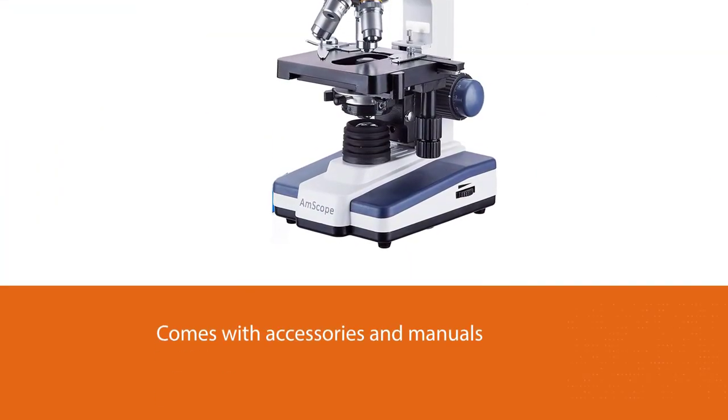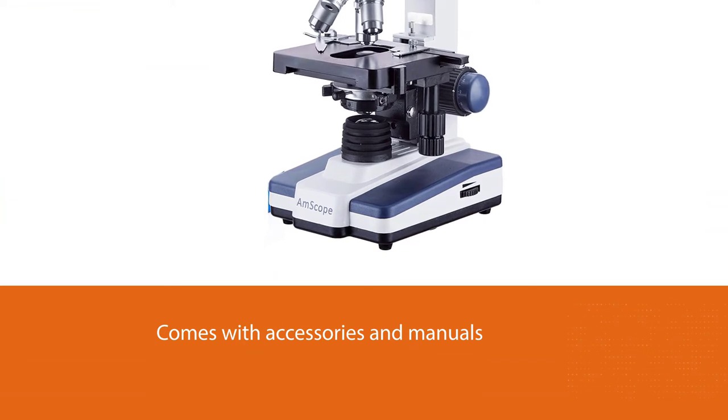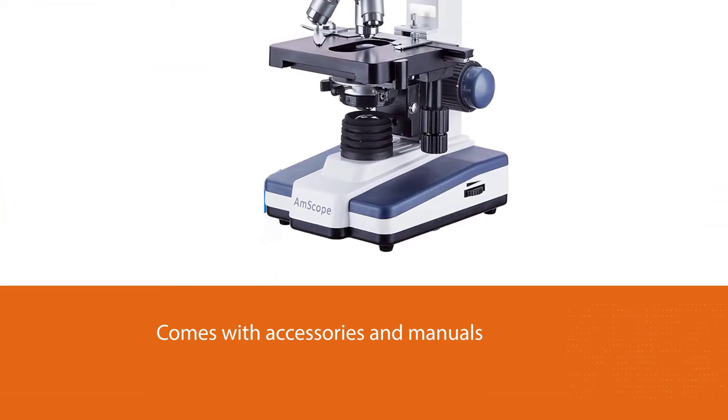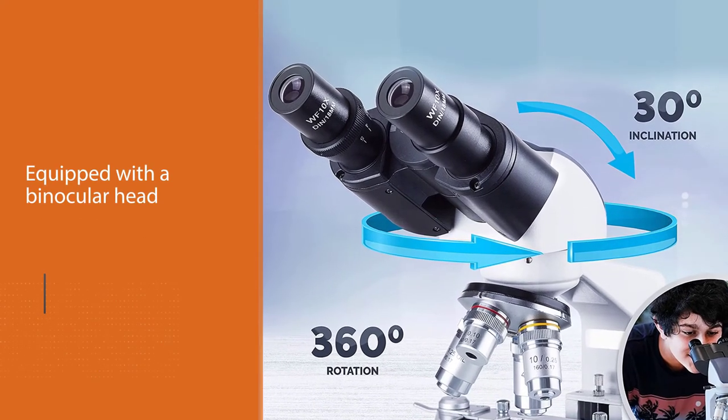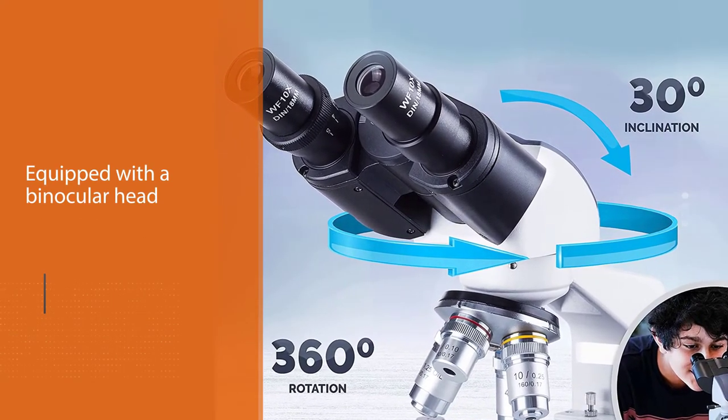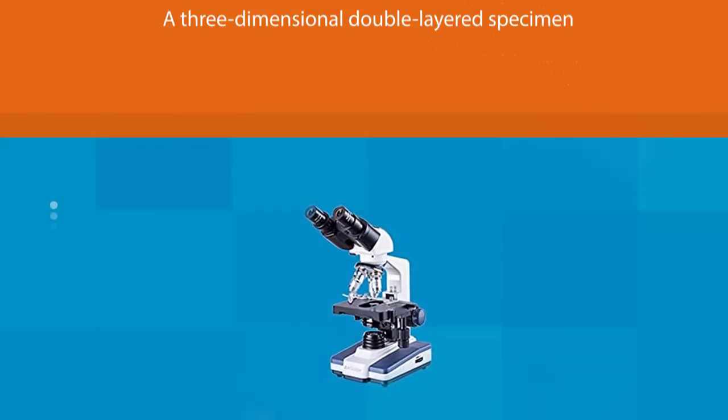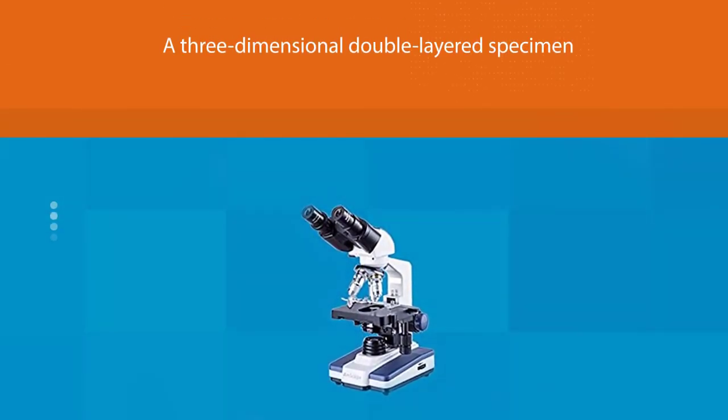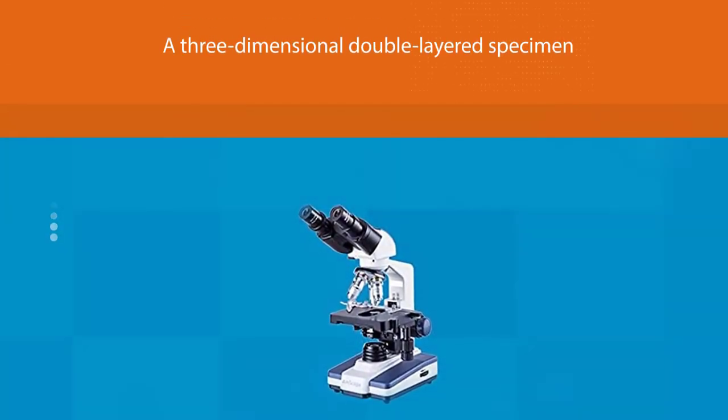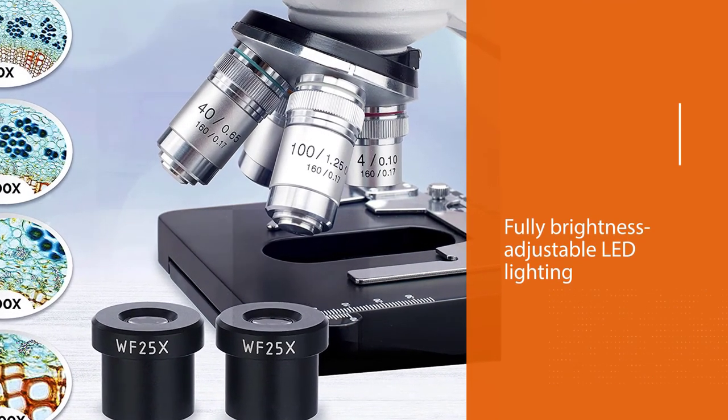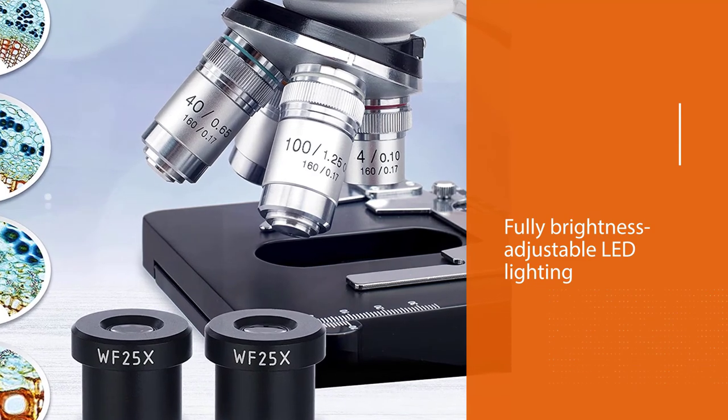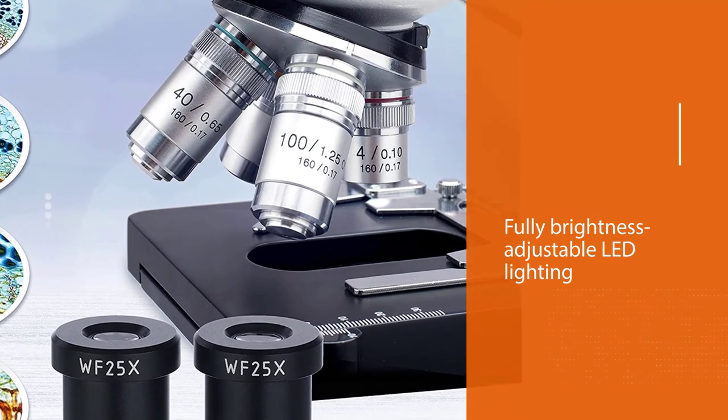It's equipped with a binocular head that is inclined and swivels, a three-dimensional double-layered specimen stage plate, variable magnification from the objective and ocular lenses, and fully brightness-adjustable LED lighting. This is a versatile microscope that can be used not only for home or casual use but for various applications.